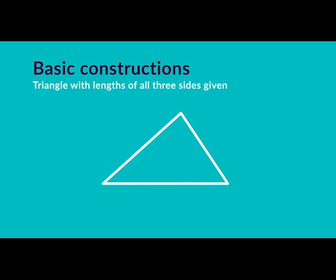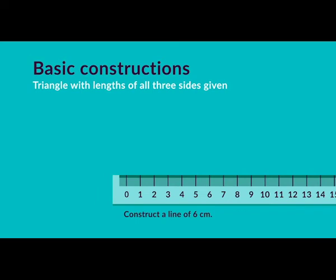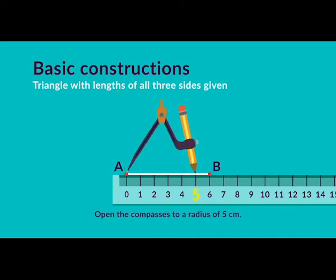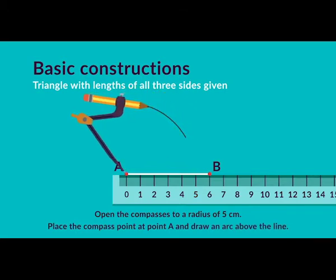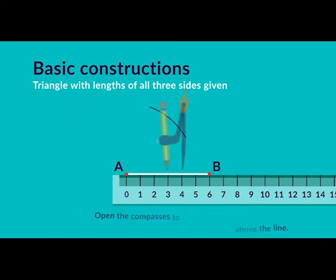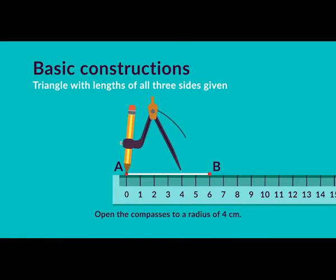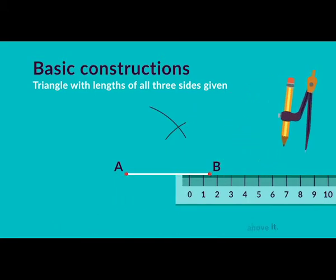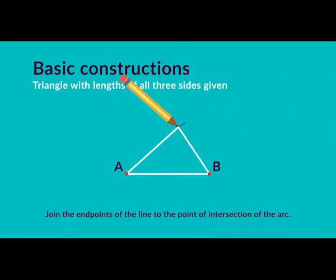Constructing a triangle with given side lengths of 6cm, 5cm, and 4cm. It's easiest to choose the longest side as the base, so start by constructing a line of 6cm. Label the endpoints A and B, and label the lines as you draw them. Open the compasses to a radius of 5cm, place the compass point at A, and draw an arc above the line. Open the compasses to 4cm, move the compass point to B, and draw an arc above the line. Join the endpoints to the point of intersection of the arcs.